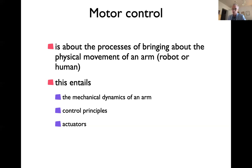That means you have to generate forces, and that's what actuators are about. It quickly turns out that that requires some measure of control — something that makes sure the mechanical action corresponds to what you're trying to do, what you're planning, what you're intending. For instance, the time trajectory we talked about last week, how that is approximated by the actual mechanical action — that's the area called motor control. A lot of work in human movement science is about motor control, dealing with forces, feedback, and things like that.